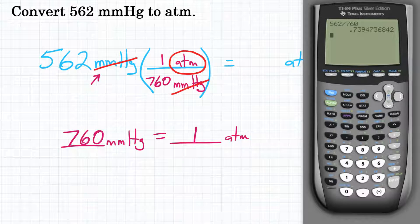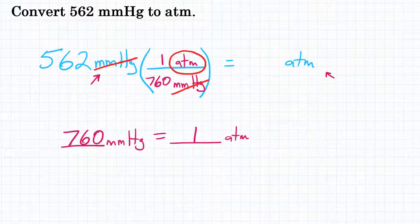We hit enter on our calculator and we get 0.7394736842. Let's round that to three significant figures because that is how many significant figures is in the number in the problem. So we would get 0.739.